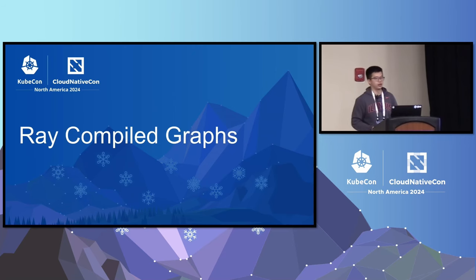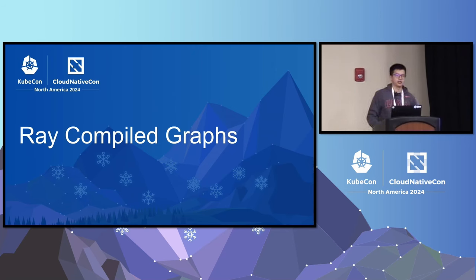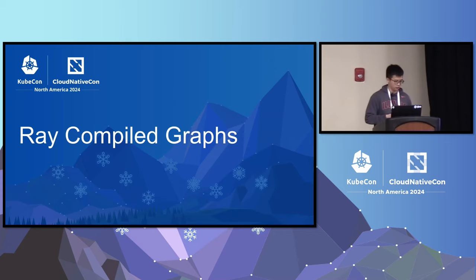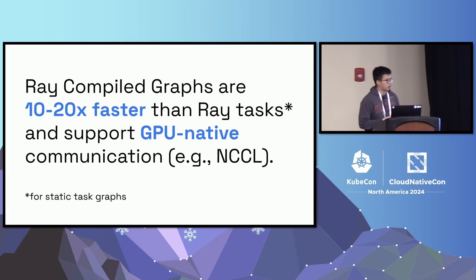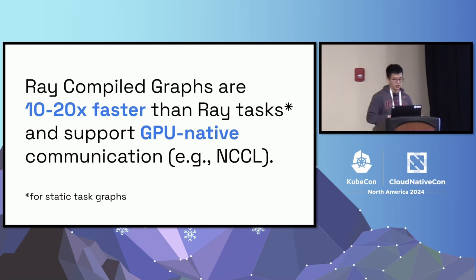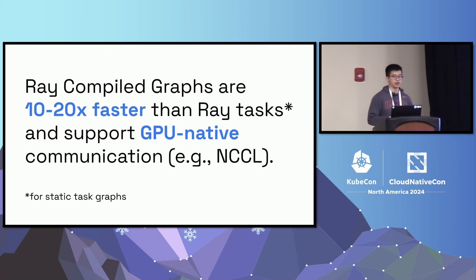The next topic is Ray Compile Graph, a new announcement from RaySummit May 2024. This API is currently in alpha, so feedback is welcome. In one sentence: Ray Compile Graph is 10 to 20x faster than Ray tasks and also supports GPU-native communication such as NCCL for static task graphs.